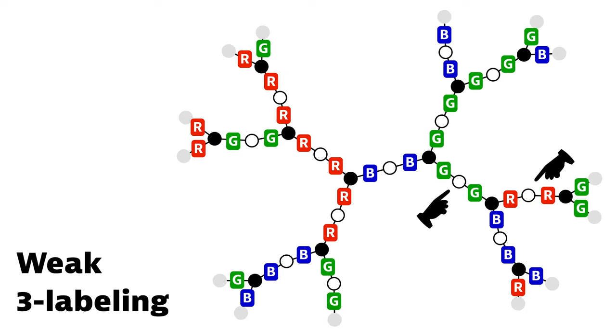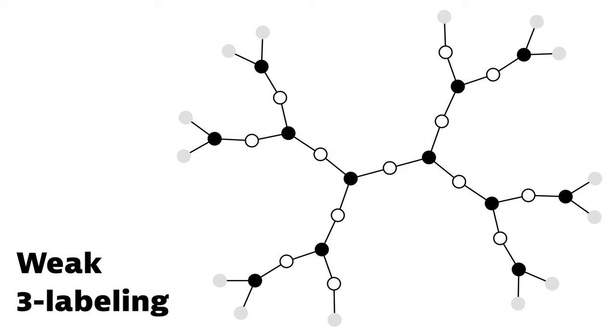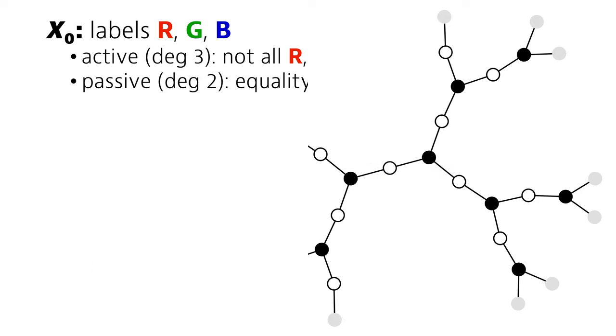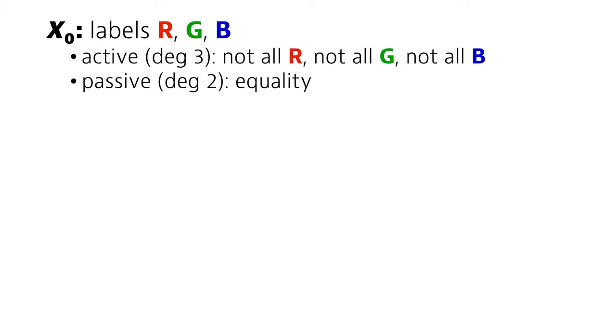Conversely, passive nodes must be monochromatic. Both of the edges around a passive node must have the same color. For example this is good, but this one is forbidden. Now, this is our problem X0.